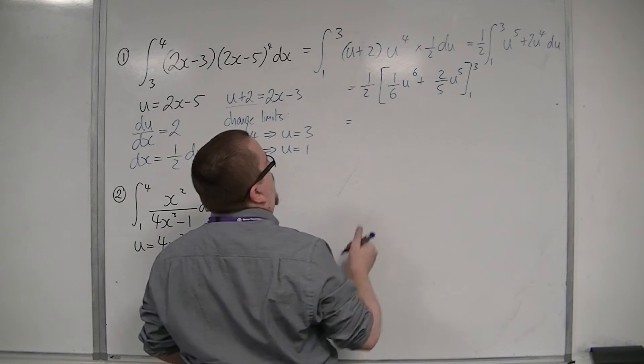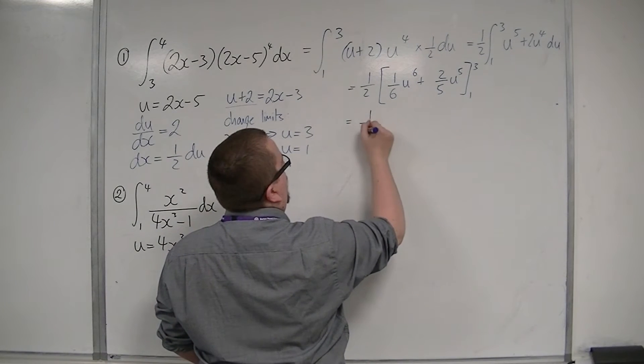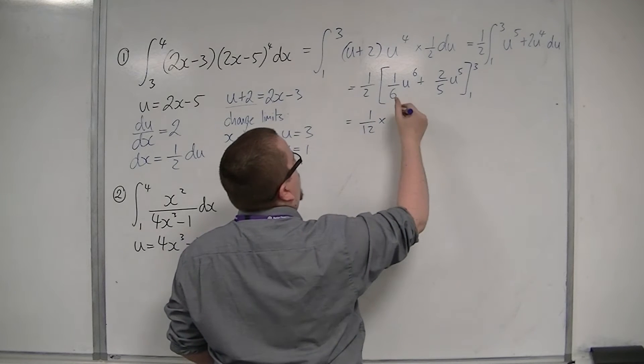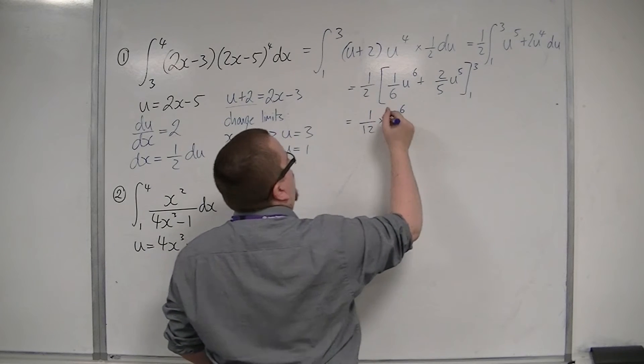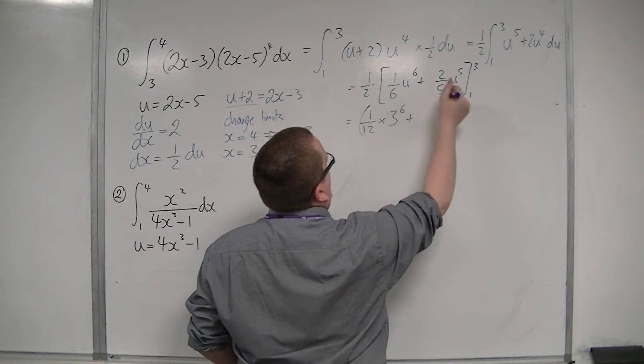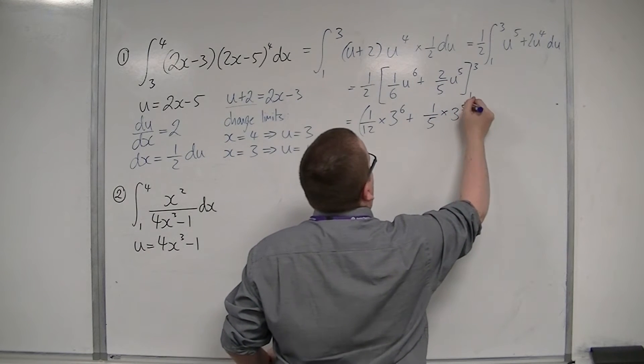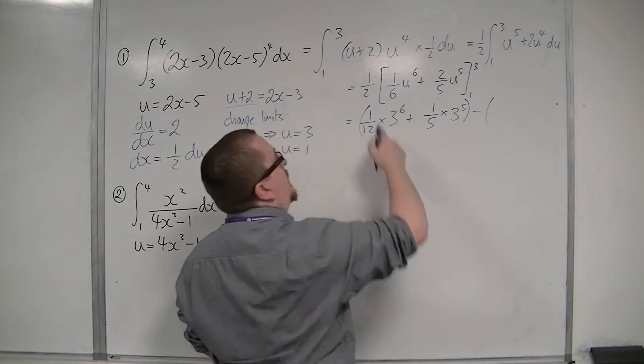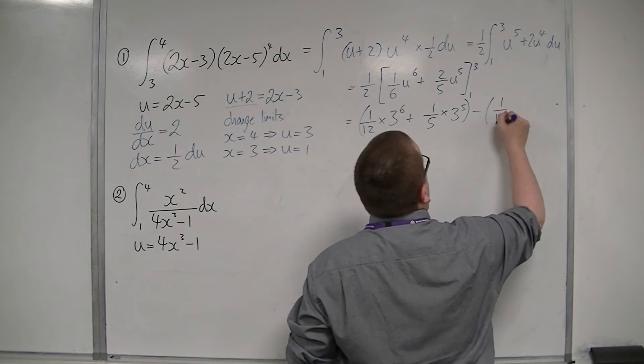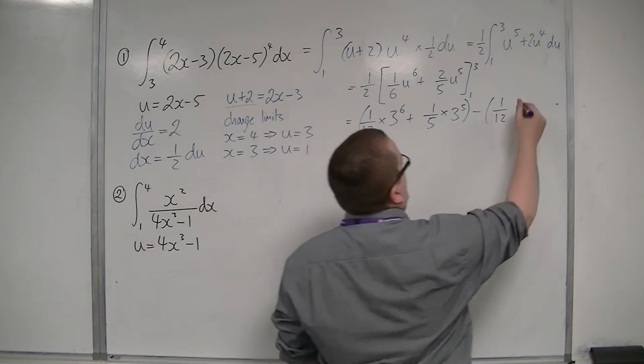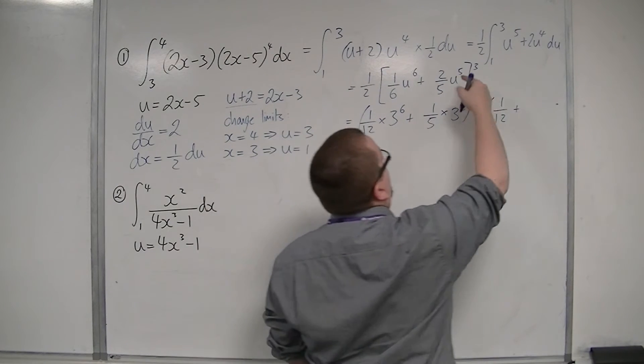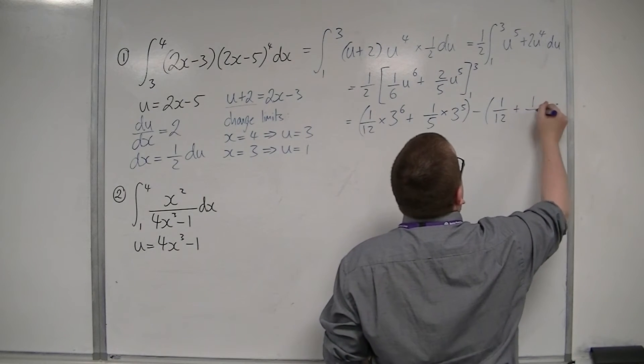Okay, so I'm going to have 1 twelfth times by 3 to the 6, plus 1 fifth times by 3 to the 5, take away 1 twelfth times 1 to the 6, so 1, plus 1 half times 2 fifths, so 1 fifth, times 1 to the 5, so just 1 fifth.